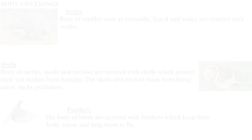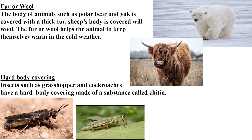Some animals that live in very cold regions, like polar bears and yaks, have bodies covered with a thick layer of fur, which helps them stay warm in extreme cold. Animals like sheep have bodies covered with wool, which also keeps them warm in cold climates. Insects have a hard body covering made up of a substance called chitin. These different body coverings help different animals live in their habitats.